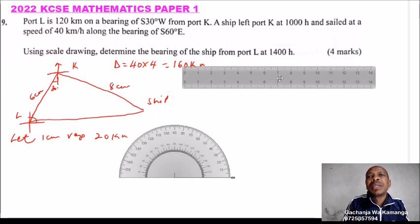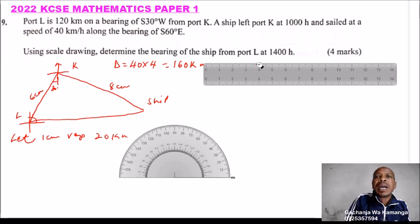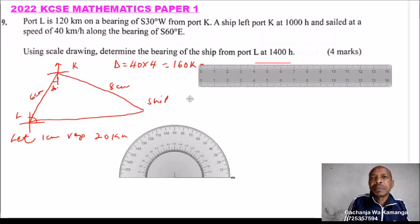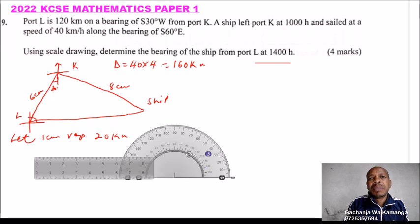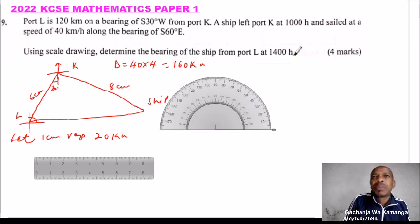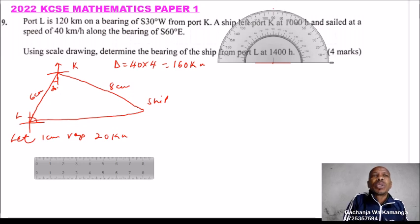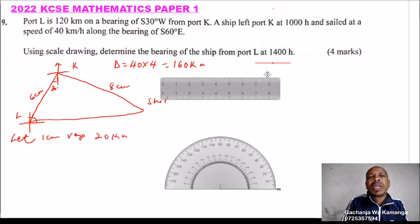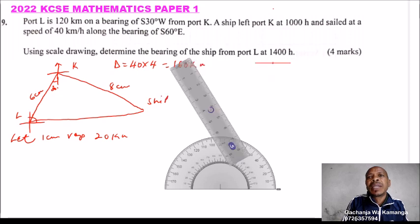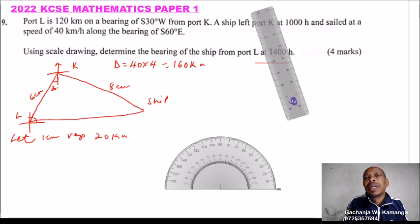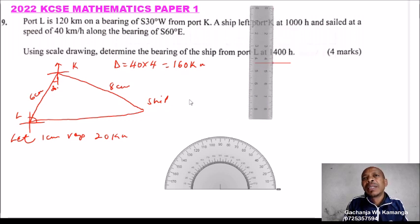We start with a ruler and draw a horizontal line. Then take your protractor, make a mark at 90 degrees. Those two points help you get a vertical line. So we draw our vertical line — that is our compass rose at K.